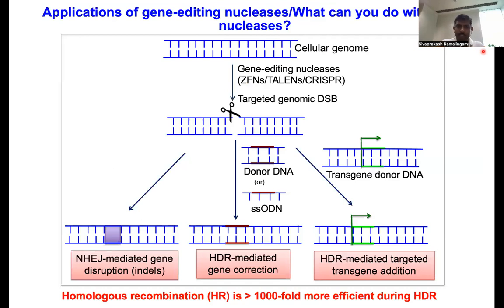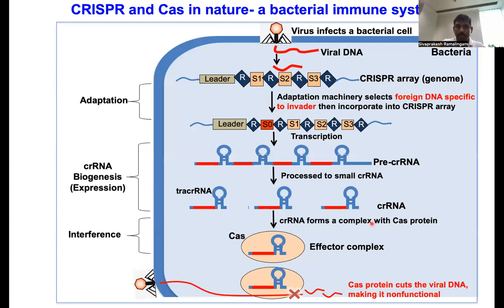But it was re-engineered for the mammalian system. What scientists did was take the two different modules — tracrRNA and CRISPR RNA — fuse them together, and create a simple single guide RNA (sgRNA). So instead of three components in nature (tracrRNA, CRISPR RNA, and Cas9), the re-engineered mammalian genome editing system contains only two parts: the synthetic guide RNA and the Cas9 molecule. How can this be used for genome editing, genetic correction, or if you want to create a mutation for therapeutics?